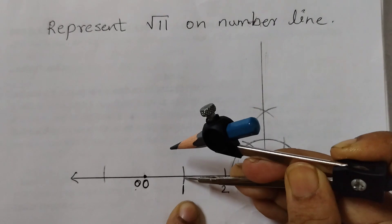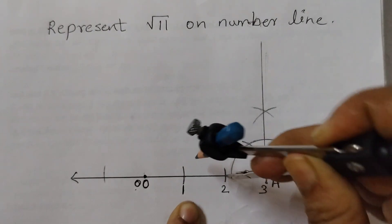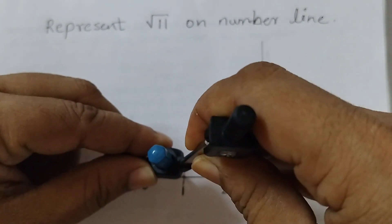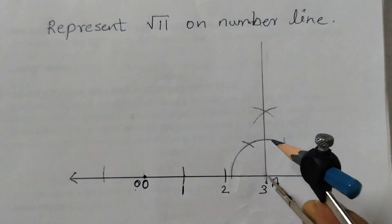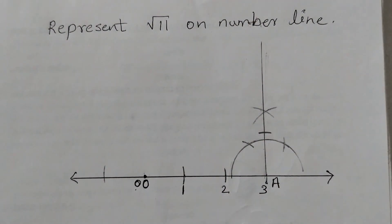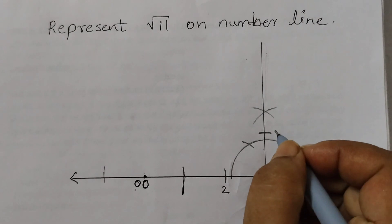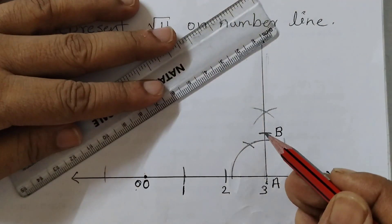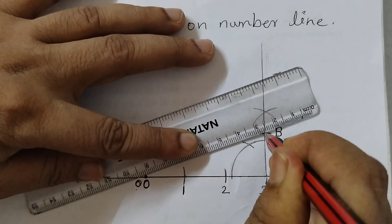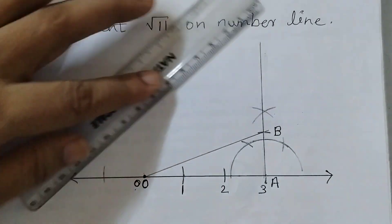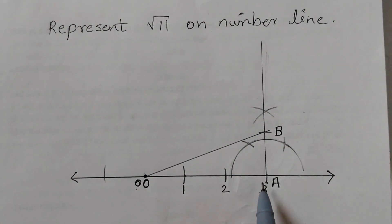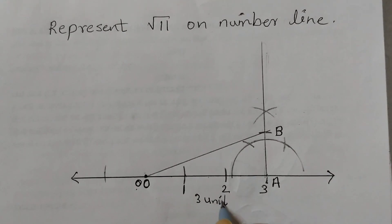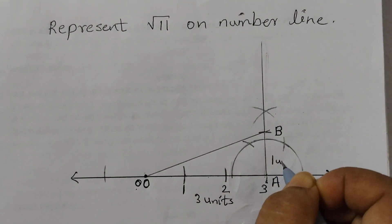Now take the measurement of one unit — that is from 1 to 0, or 2 to 1 — because we need one unit length. Keep the metal point at A and mark an arc on the perpendicular. This point is point B. Join O and B. So OA is 3 units and AB is 1 unit.